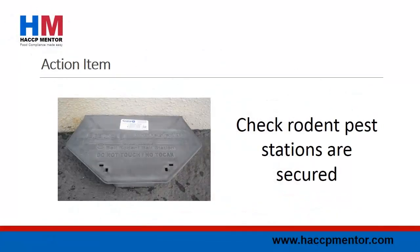For episode 40 of HACCP Mentor Review, the action item that I have set for you is to go around and check all your bait stations are secured. You or your pest control contractor can secure these rodent bait stations with chain or with glue. The purpose of securing is to make sure that they stay in place and are effective in controlling rodent activity at your food premises.